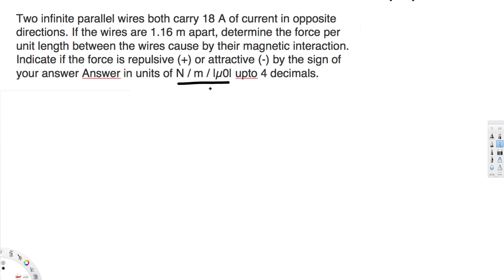Okay, let's note this down. They're asking to find the force per unit length. Magnetic force per unit length is given by mu naught times I1 times I2 divided by 2 pi r. Now let's look at the given information.